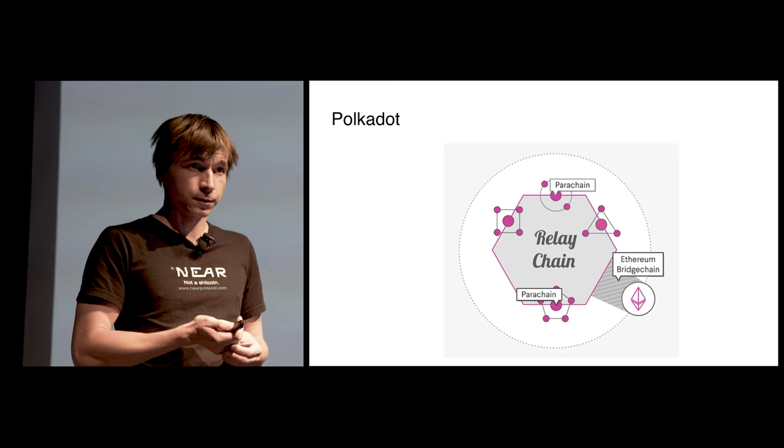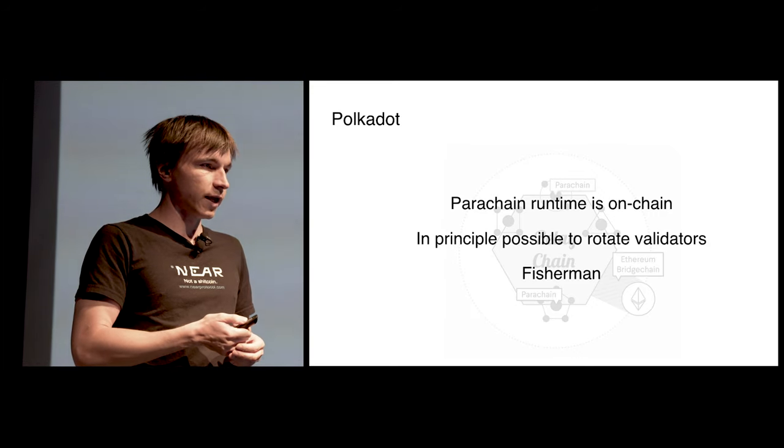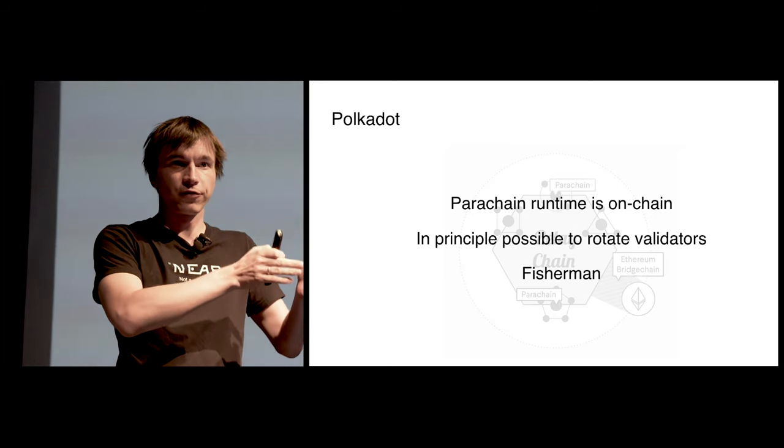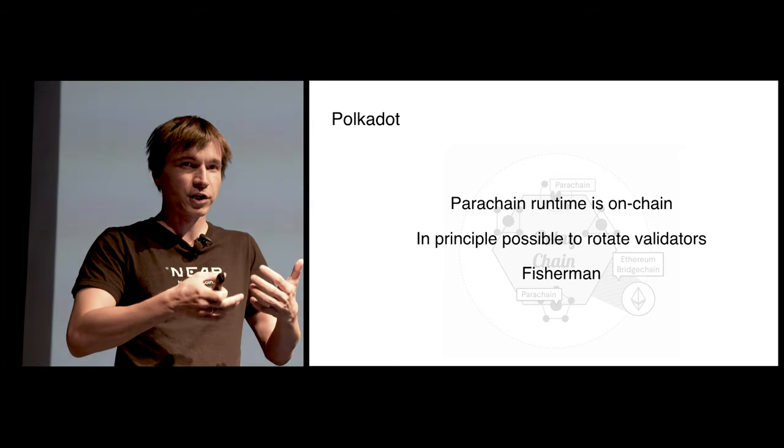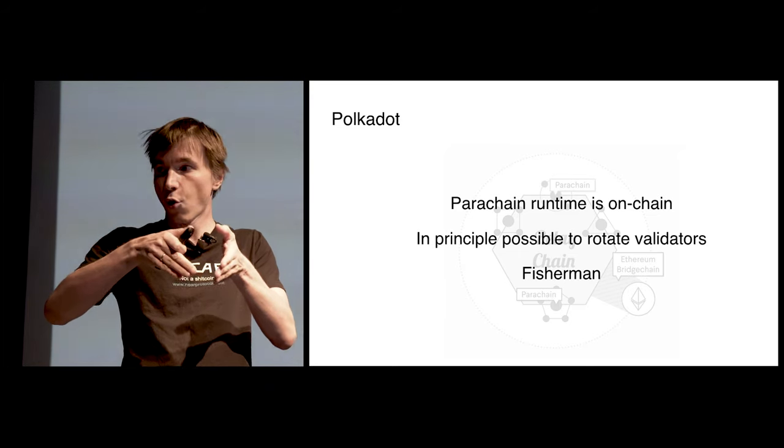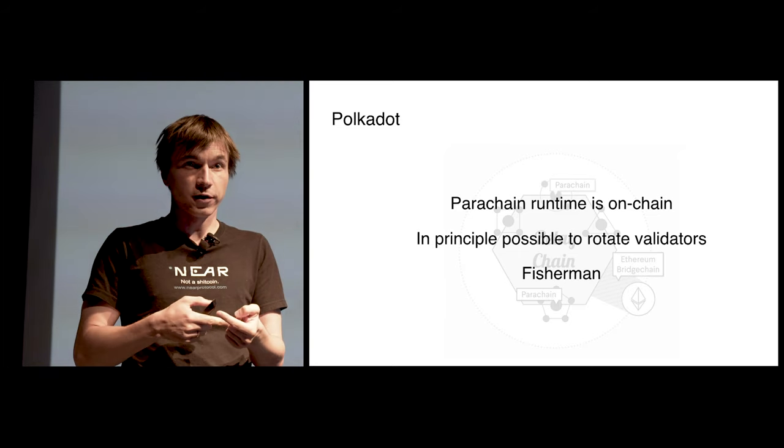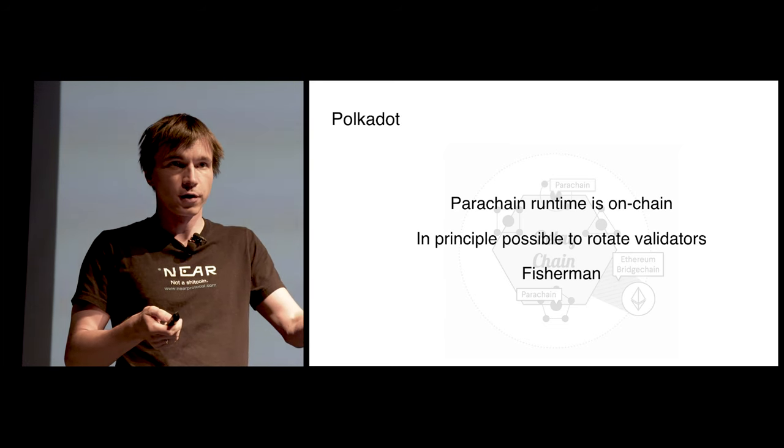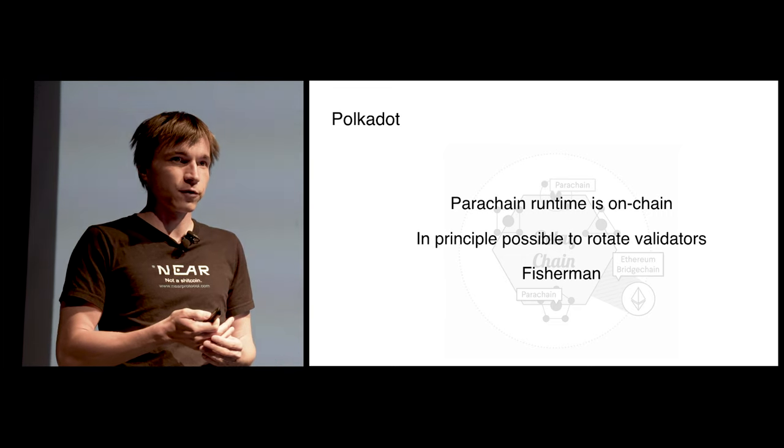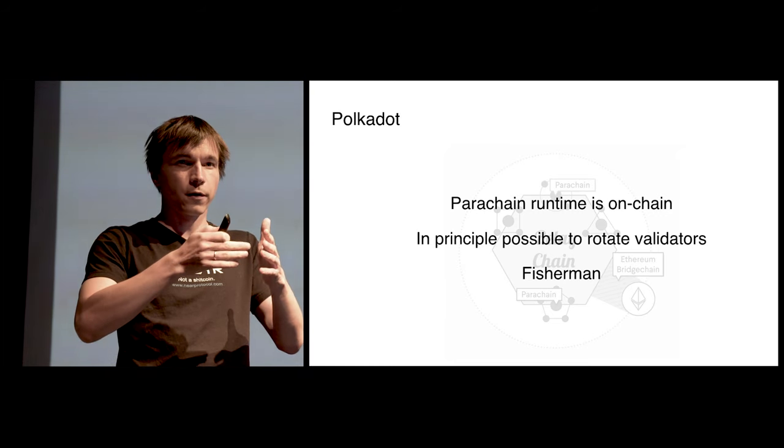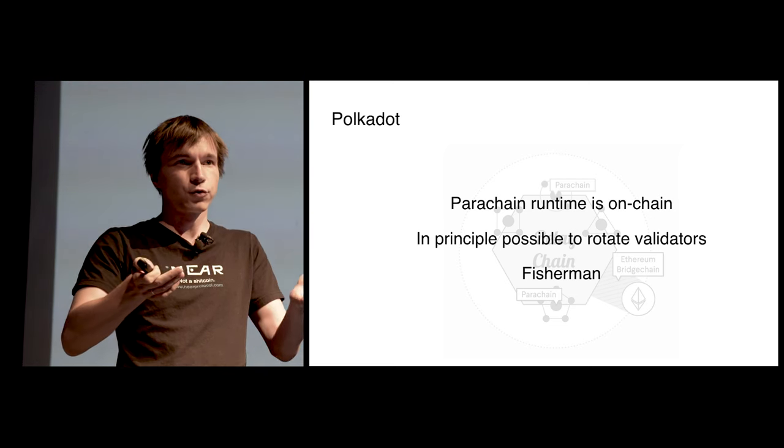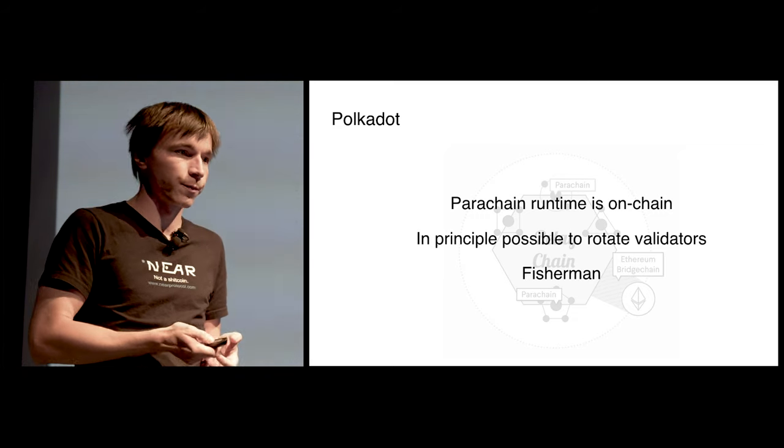Polkadot is somewhat similar to Cosmos. However, the big difference is that the actual runtime of every blockchain is stored on the chain. So in Cosmos, every blockchain is completely different binary. In Polkadot, in principle, it can be built in such a way that the parachains are the same binaries. They don't have to be, but they could. And the runtime of the parachain is stored on-chain, meaning that validators in principle could rotate. However, in what Polkadot is planning to ship this year, they will not be rotating. So Polkadot will have the same security as Cosmos when they ship. And Polkadot is also using Fisherman for the security, so you don't need to trust that two-thirds of the validators are honest. It is enough to trust that there is at least one honest validator per shard.